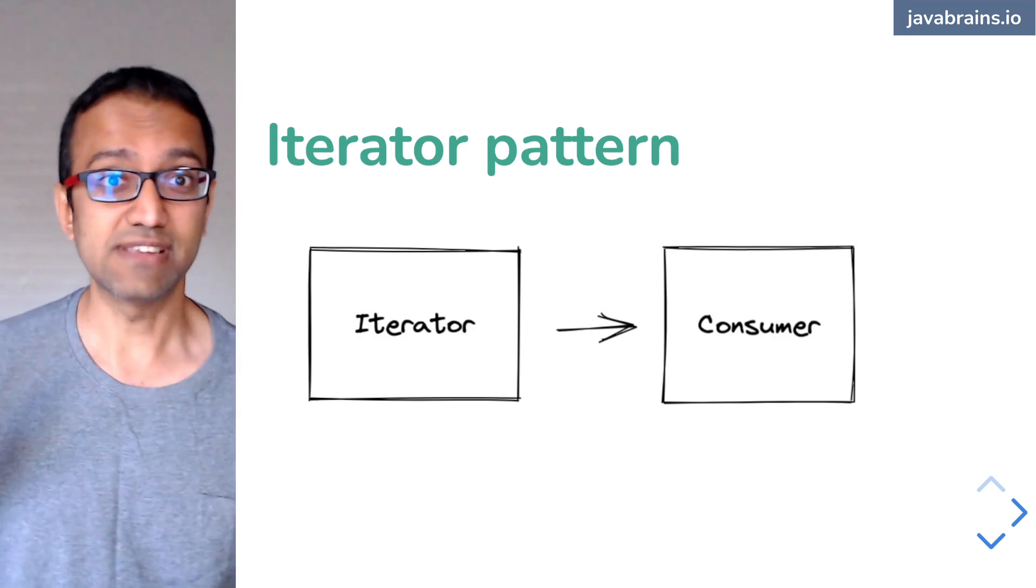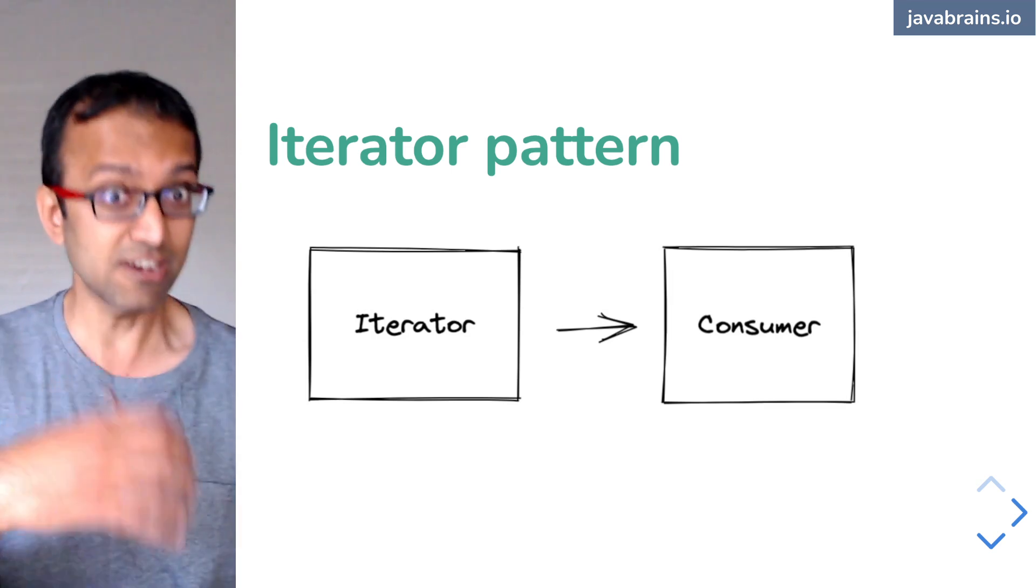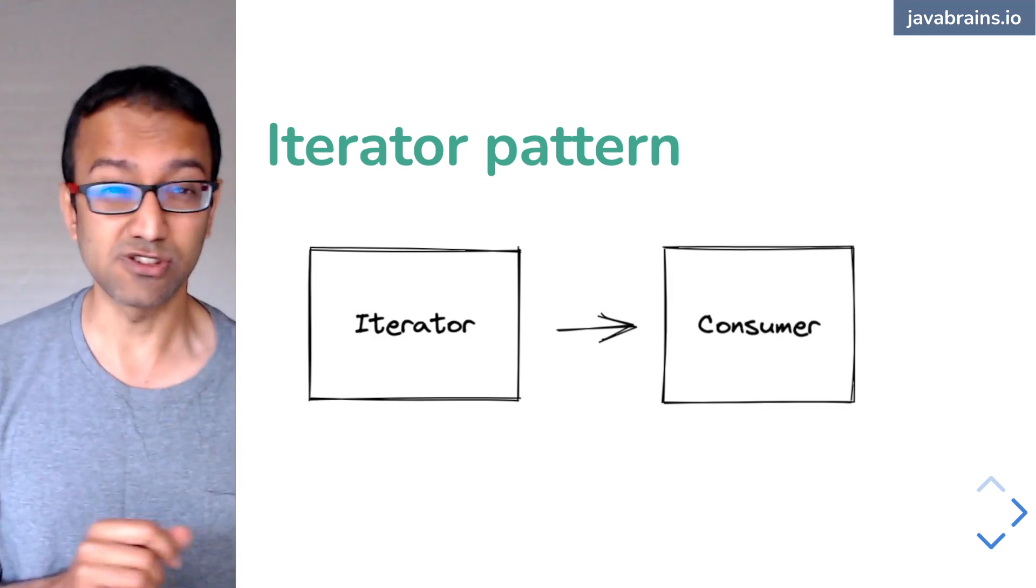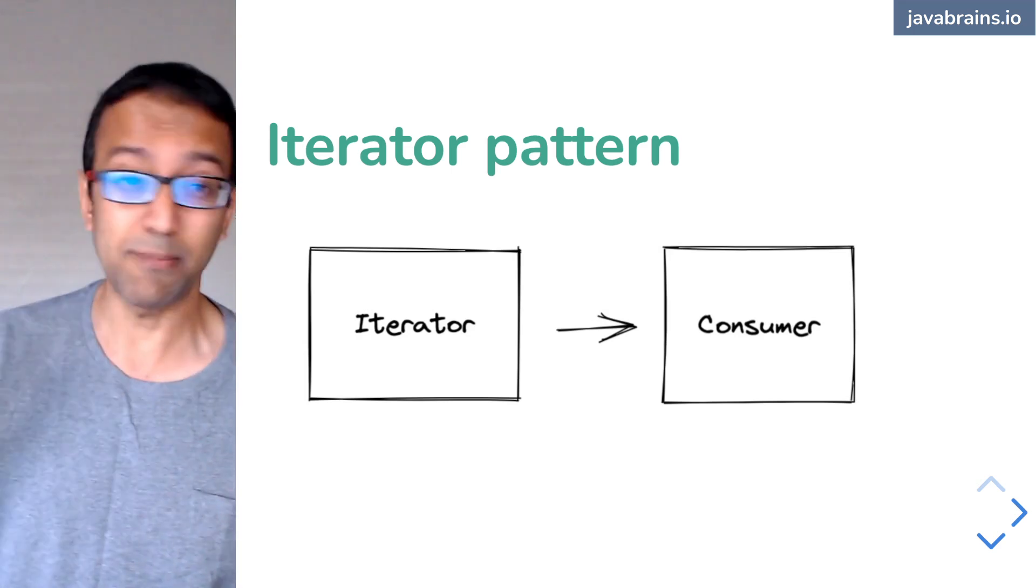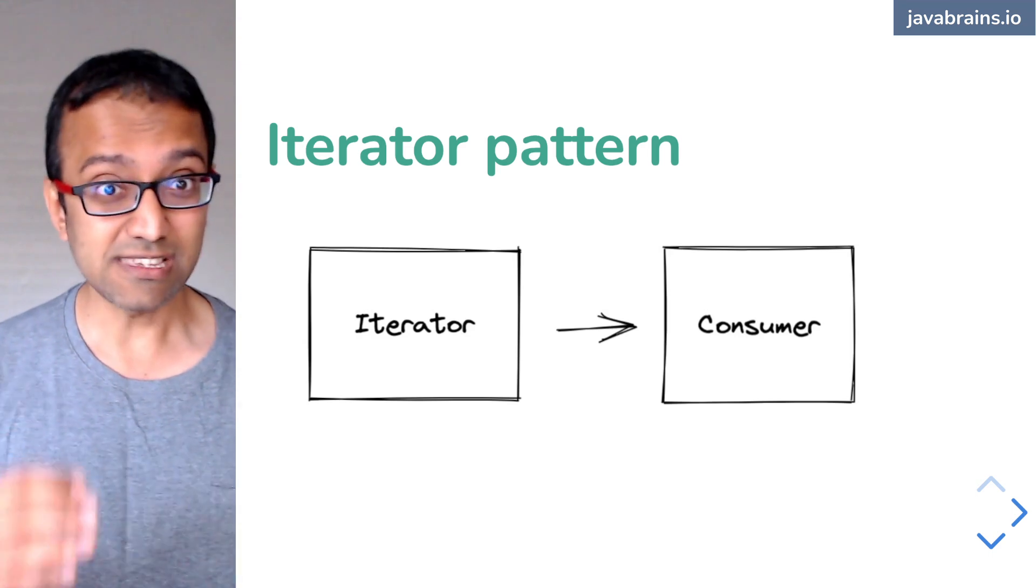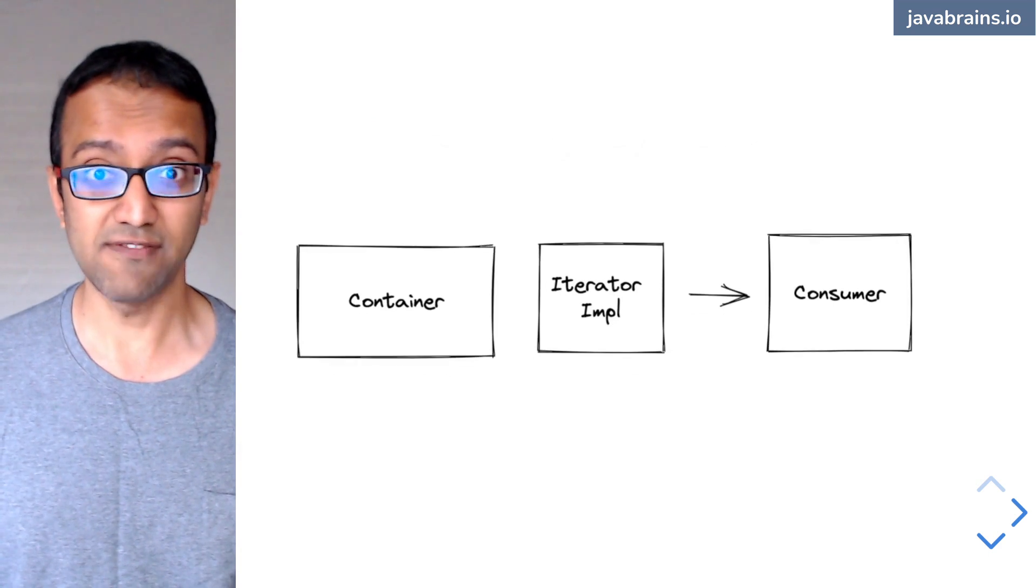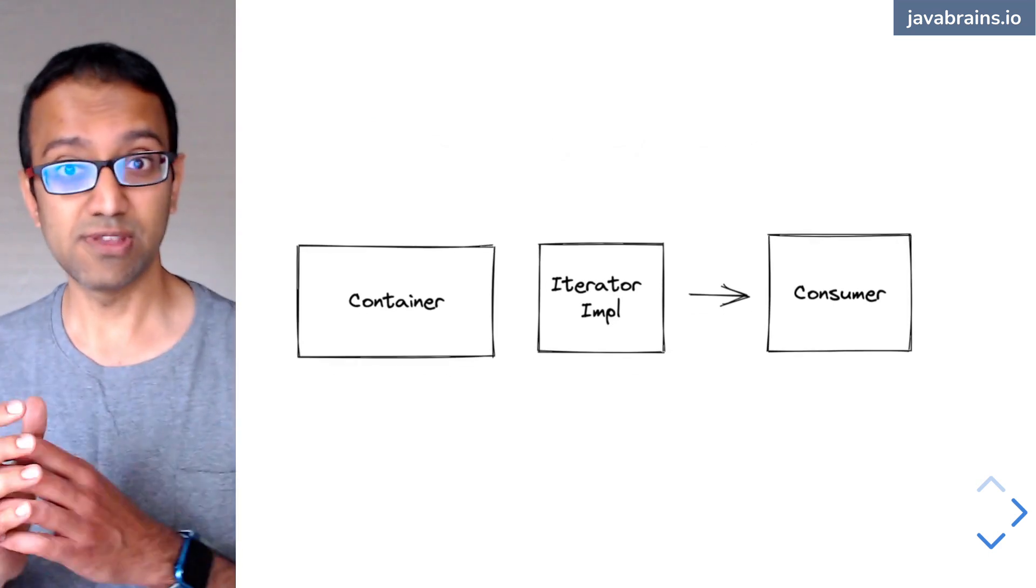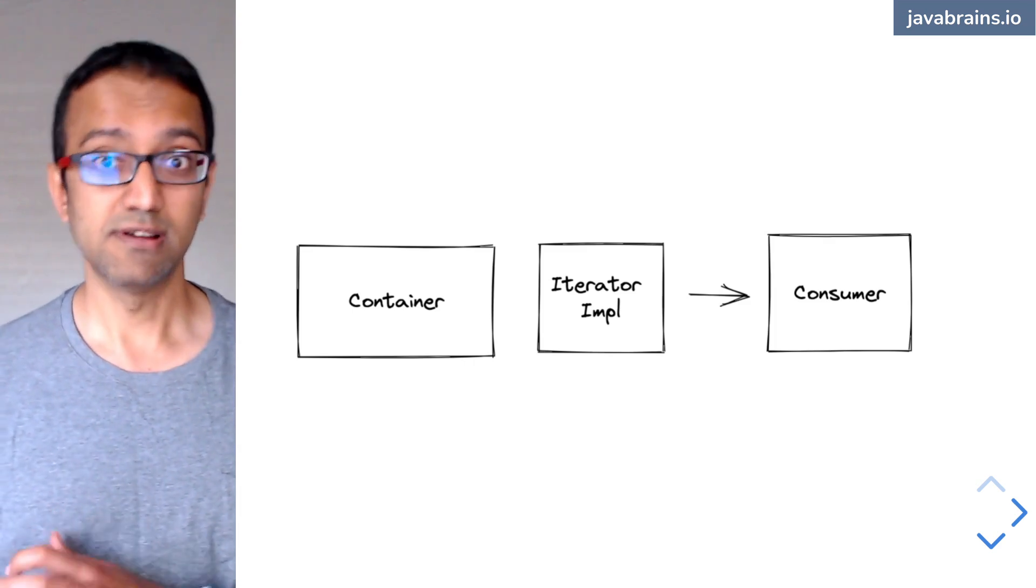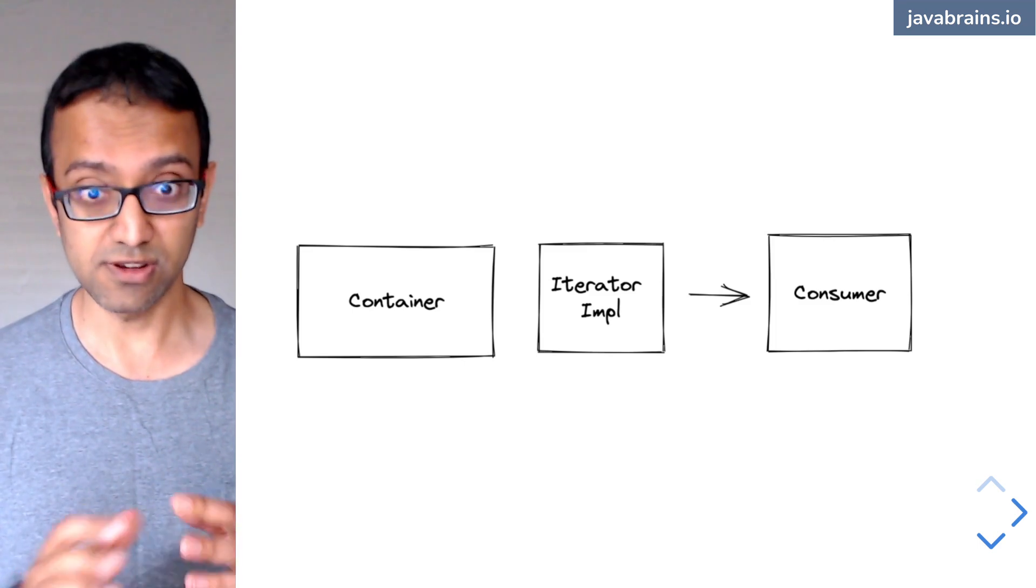You just use the iterator language. So hey, collection, give me an iterator. I speak only the iterator language. The collection gives you the iterator, which knows how to iterate on that collection. So you don't care whether it's an ArrayList or a map or whatever. The consistent user interface. Basically what you have is the container giving you the iterator implementation, and then the consumer is going to talk to the iterator, not to the container itself.